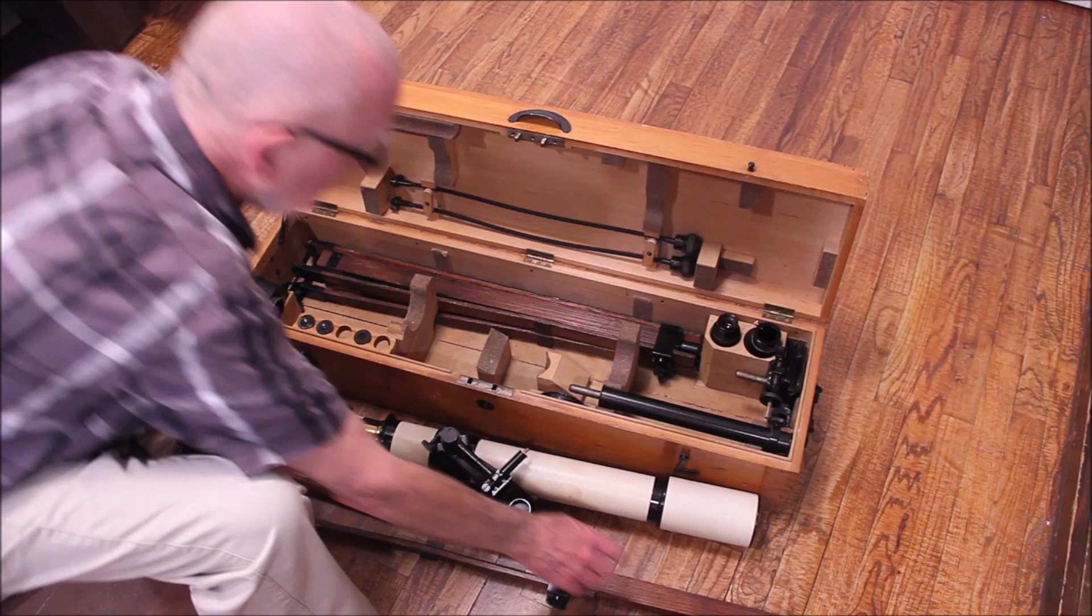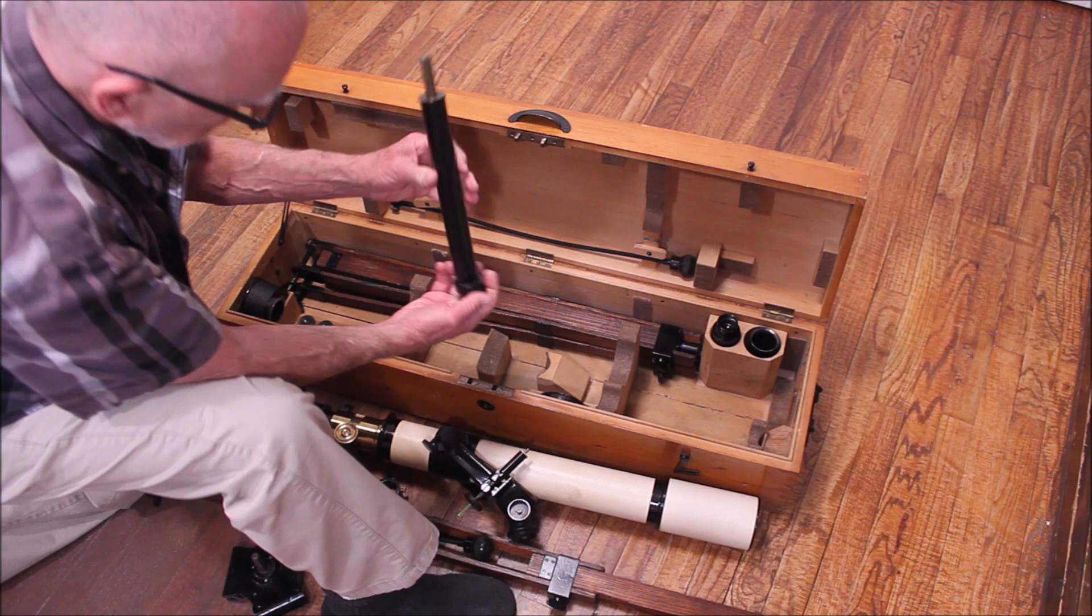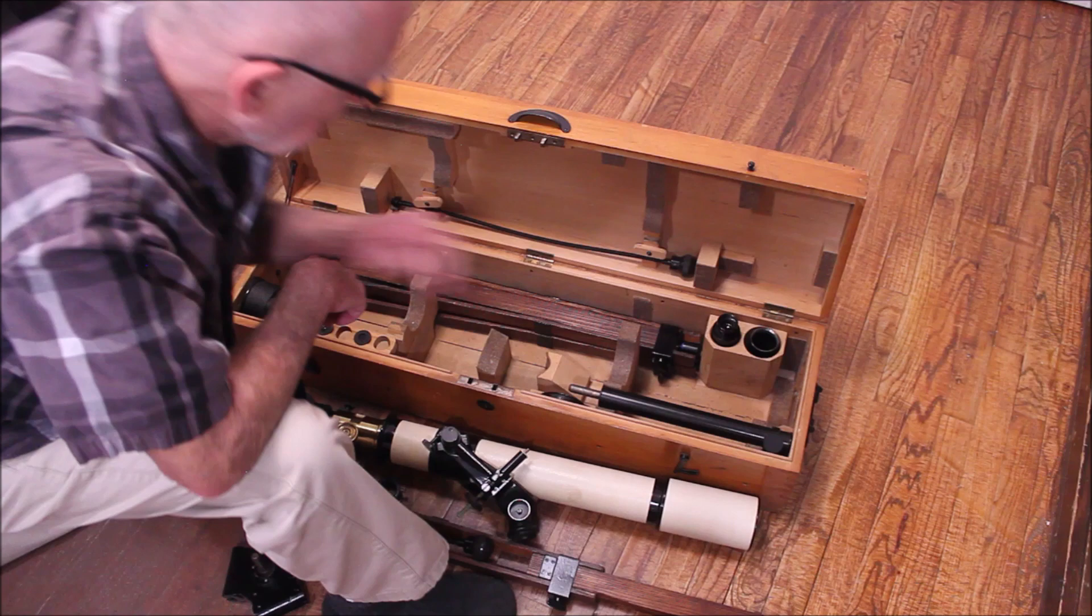All right. Here's some other things. Here's the tripod head. Everything is stored beautifully inside there. I'll show you this all mounted up. That's just the extension post to make the telescope sit up at a higher height.